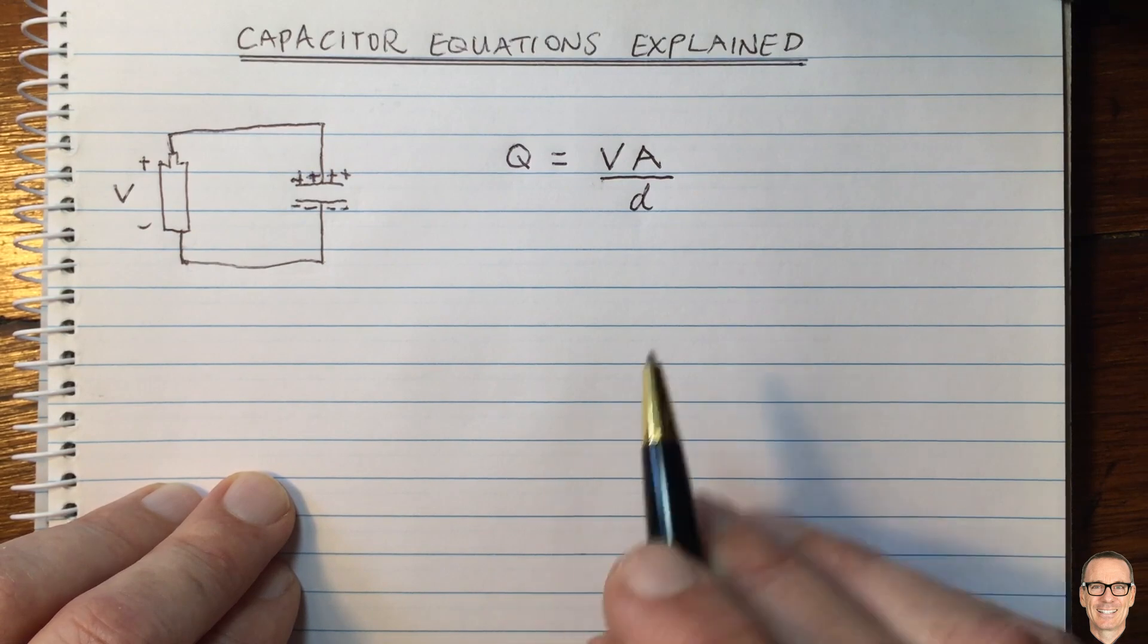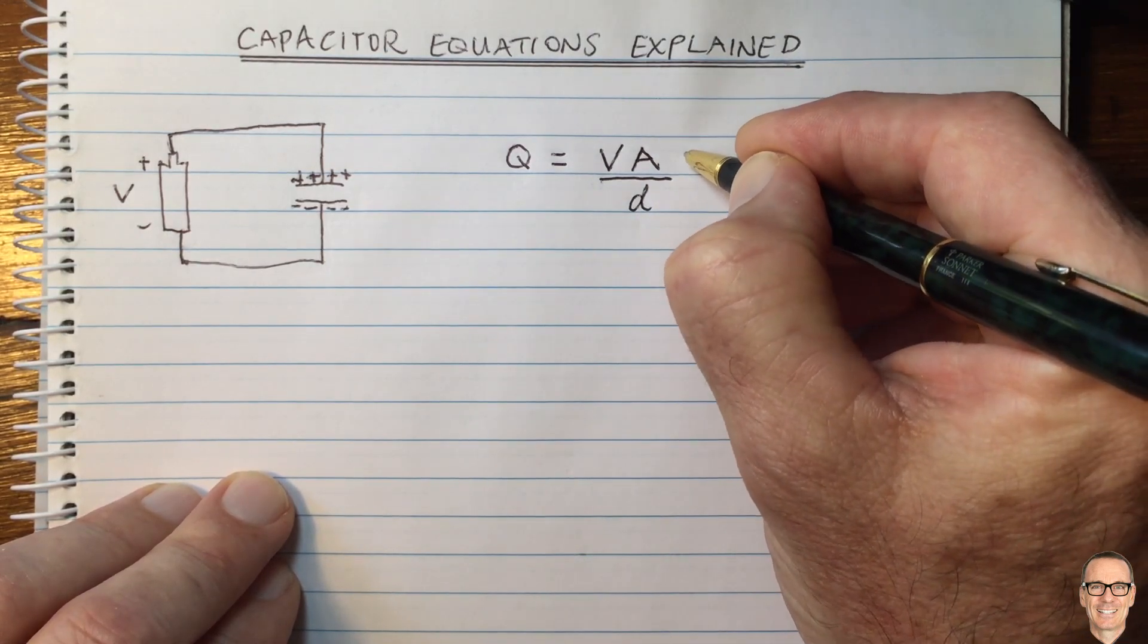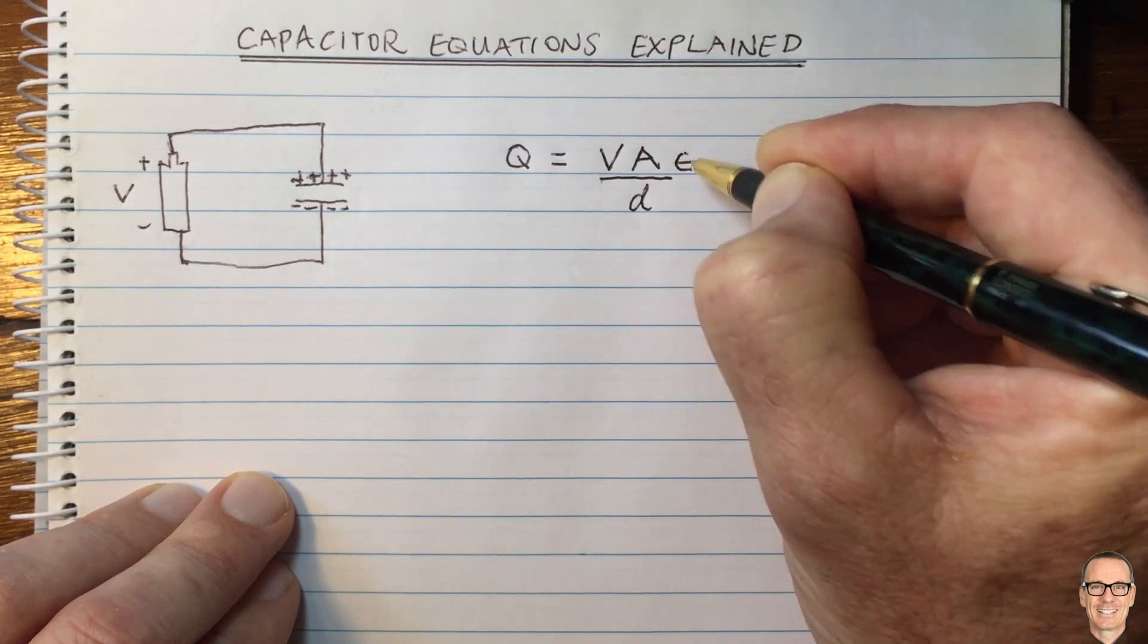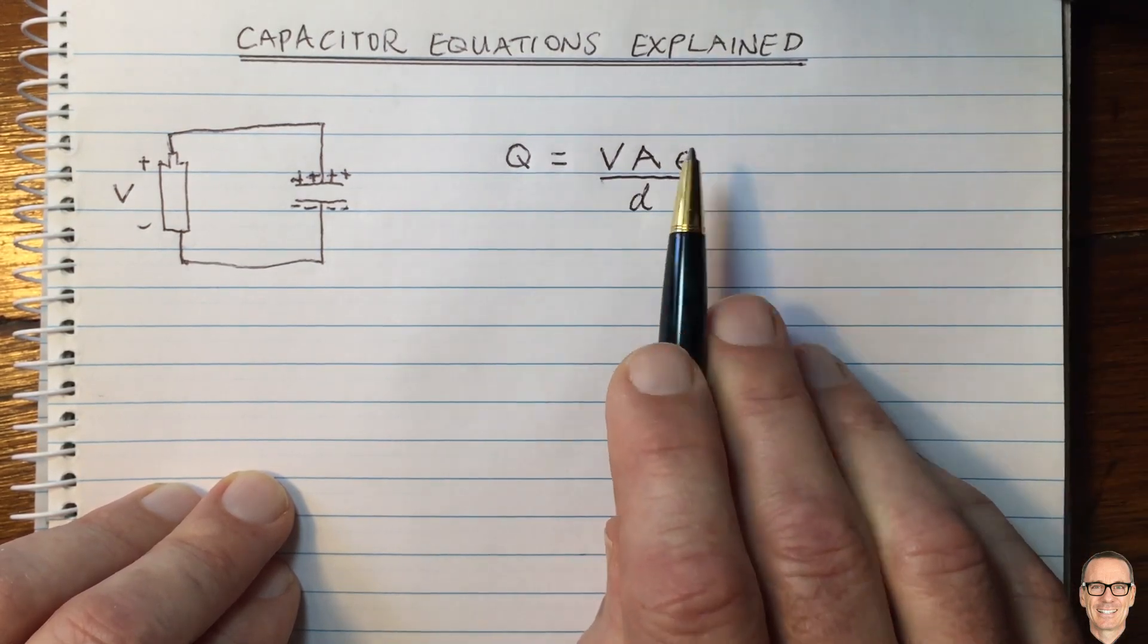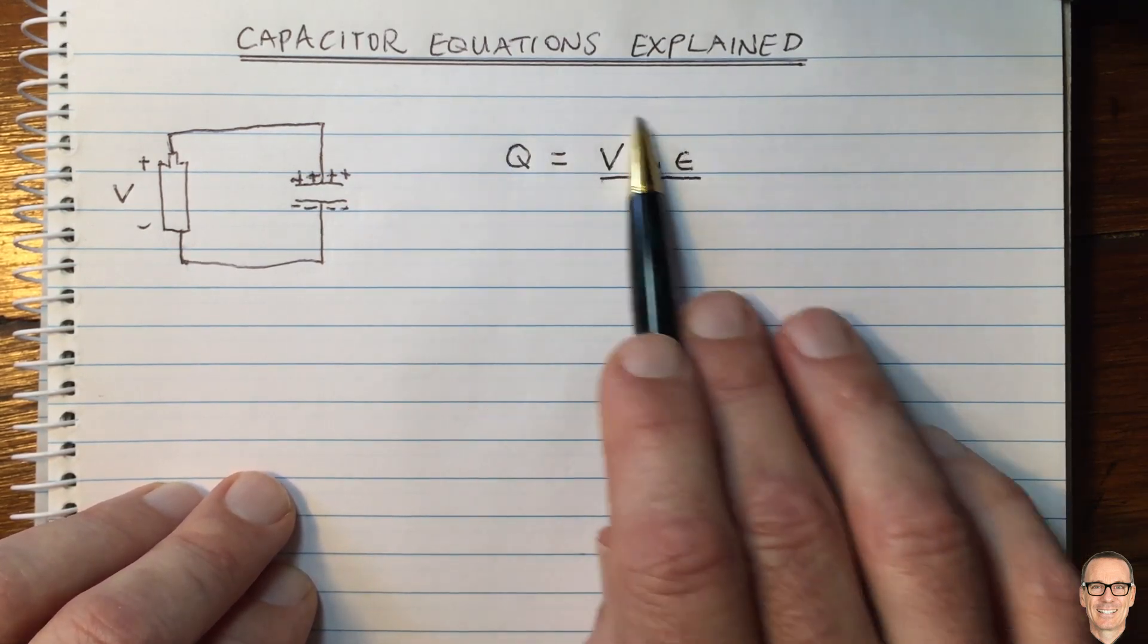There's another parameter in terms of the proportionality constant, and that is something called permittivity, which we call little epsilon. I'll talk more about that in a minute. So here we have the equation, the main equation.